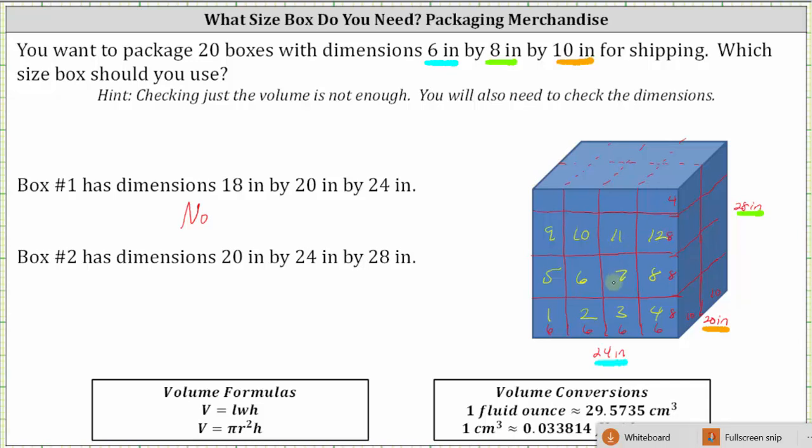And then 12 more boxes will fit behind these 12 boxes. 12 times 2 is equal to 24. Box 2 will hold 24 boxes that measure 6 inches by 8 inches by 10 inches with this extra space on top left over. And since 20 boxes is less than 24 boxes, box 2 will work. You should use box 2. We'll take a look at another example in the next video. Thank you for watching.